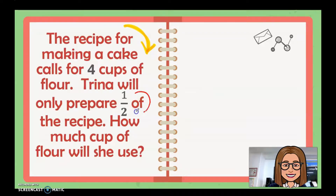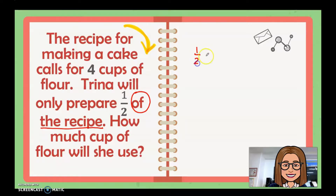Trina will only prepare one half of the recipe. The recipe is four cups — for one recipe it needs four cups of flour. But Trina will only prepare one half of the recipe, so when you write it, it's going to be one half of four. So one half of the recipe is four cups of flour.